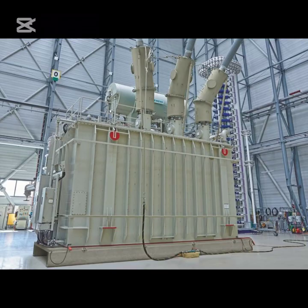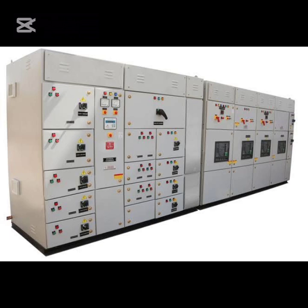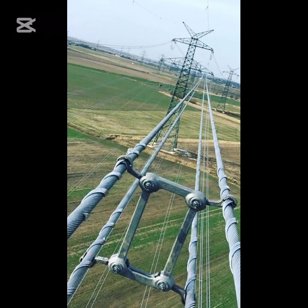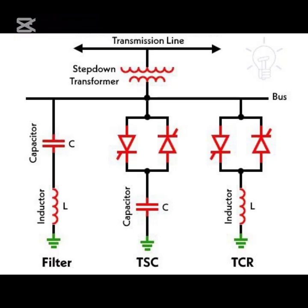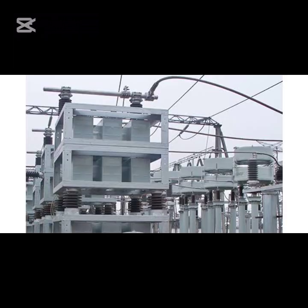Second, line length reduction: reducing the length of the transmission line can decrease the Ferranti effect. Third, voltage regulation: implementing voltage regulation devices such as tap-changing transformers can help maintain a stable voltage level. Fourth, power factor correction: improving the power factor of the system can reduce the Ferranti effect. Fifth, line design optimization: optimizing the design of the transmission line, such as using bundled conductors or adjusting the line geometry, can help minimize the Ferranti effect.